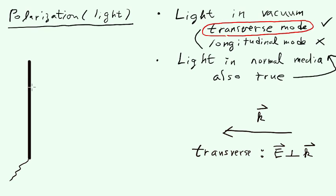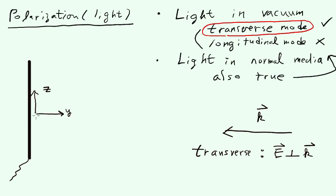Let's define a coordinate system. We'll consider the vertical axis along the antenna as the Z axis. Then let's define the Y axis horizontally, and the X axis is coming towards us in this diagram. So we have an XYZ coordinate system. Let's consider the light traveling along the Y direction — pointing towards negative Y.